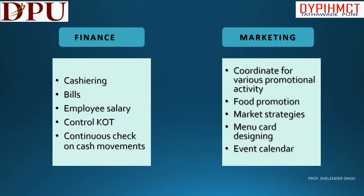The last two departments are Finance and Marketing. Finance coordination involves cash handling, billing, employee salary, controlling kitchen order tickets, continuous checks on cash movements, scheduled audits for cash and other transactions, and vendor payments. Marketing coordination includes various promotional activities, food promotions, market strategies, menu card designing, and event calendars. These are the different coordinations that F&B carries out with all departments to run smooth operations within the hotel.